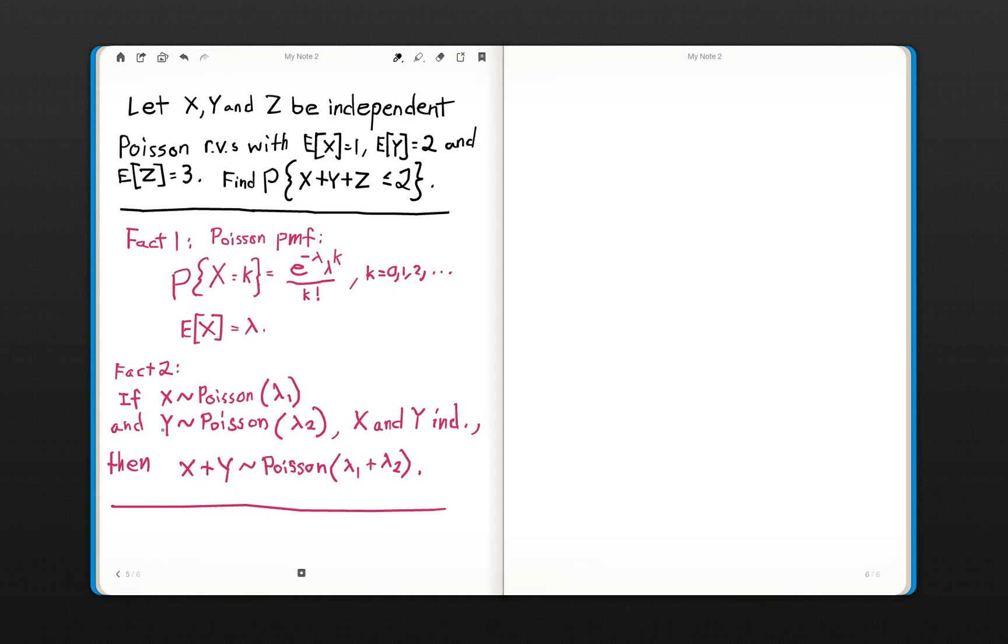Fact 2 is also something you want to most certainly commit to memory, and it's considered common knowledge in working any probability question. If X is distributed Poisson with rate lambda 1, and Y is distributed Poisson with rate lambda 2, and X and Y are independent, then it follows that X plus Y is distributed Poisson of lambda 1 plus lambda 2.